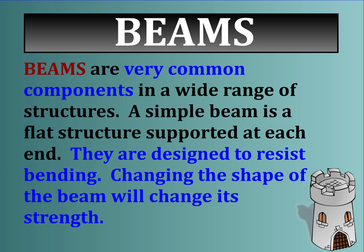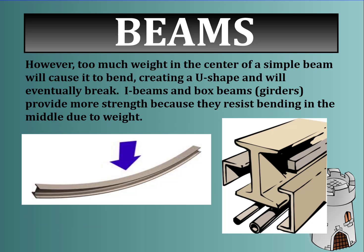Beams are very common components in a wide range of structures. A simple beam is a flat structure supported at each end, designed to resist bending. Too much weight in the center of a simple beam will cause it to bend into a U-shape and eventually break. I-beams and box beams, called girders, provide more strength because they resist bending in the middle. Changing a beam's shape from flat to an I-shape or box shape increases its strength.